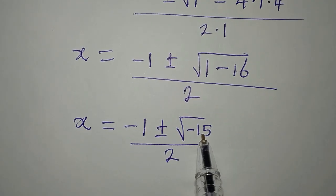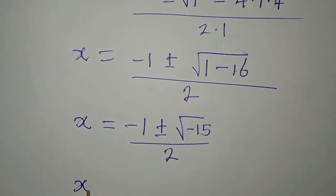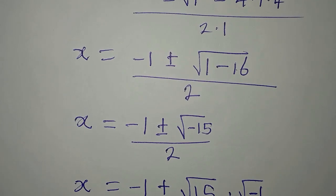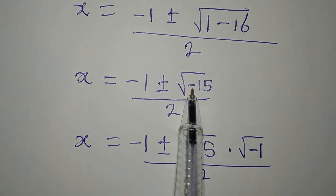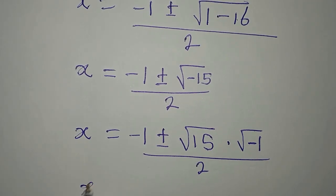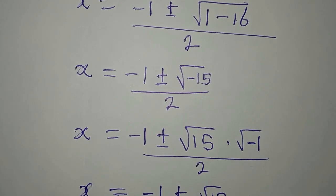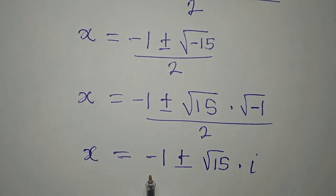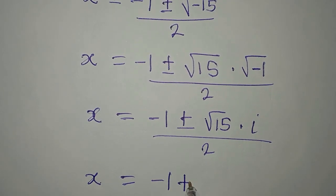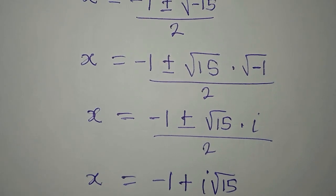Now we are having the square root of a negative number, so this means that we are not having a real solution from here. But we can still proceed with this. So x will become minus 1 plus or minus square root of 15 times square root of negative 1, all over 2. This is because the negative has to come out, otherwise you will not be able to find the square root of negative 15. Now our x is equal to minus 1 plus or minus square root of 15 multiplied by i, because the square root of negative 1 is i, then we divide by 2.